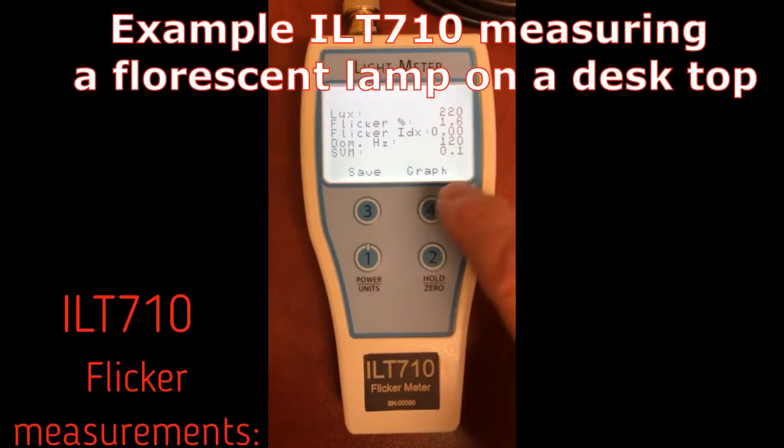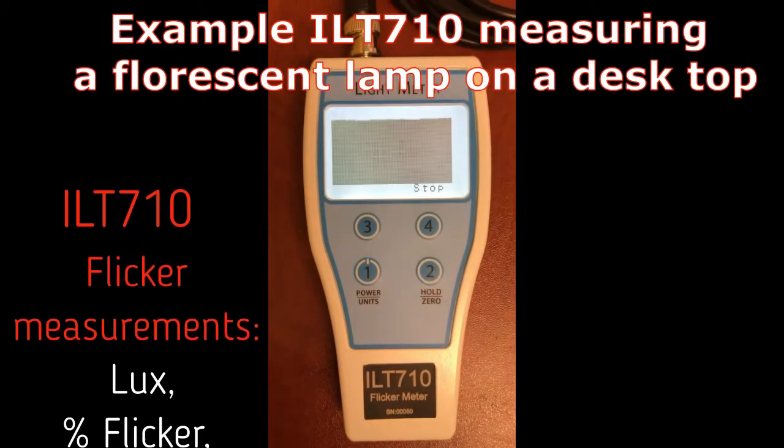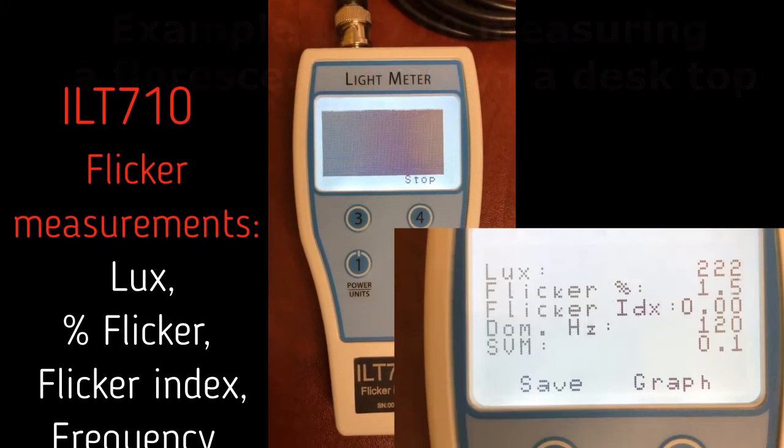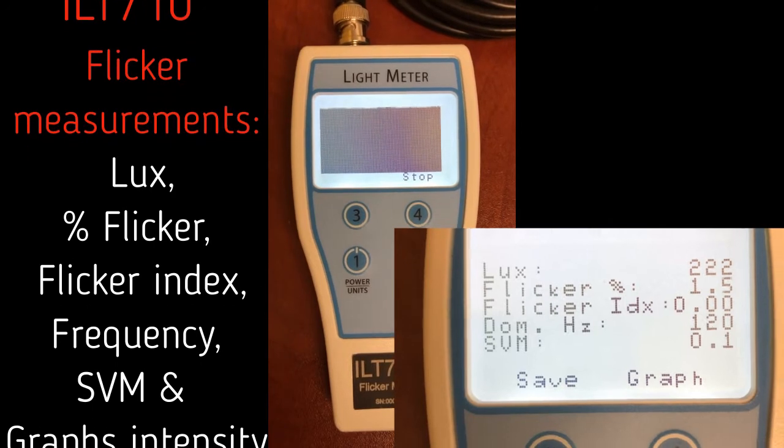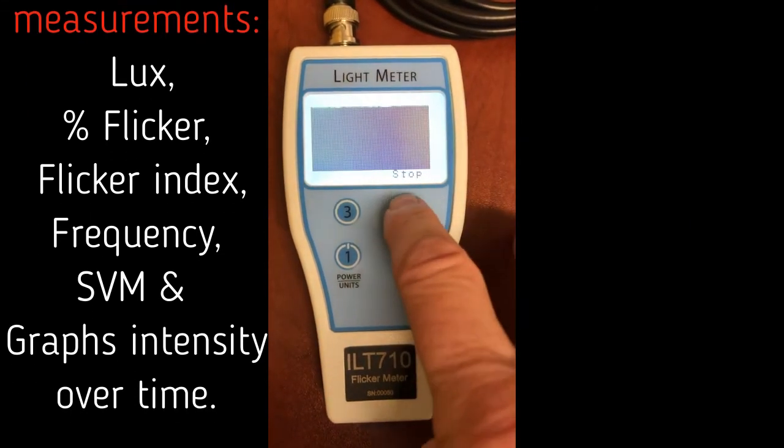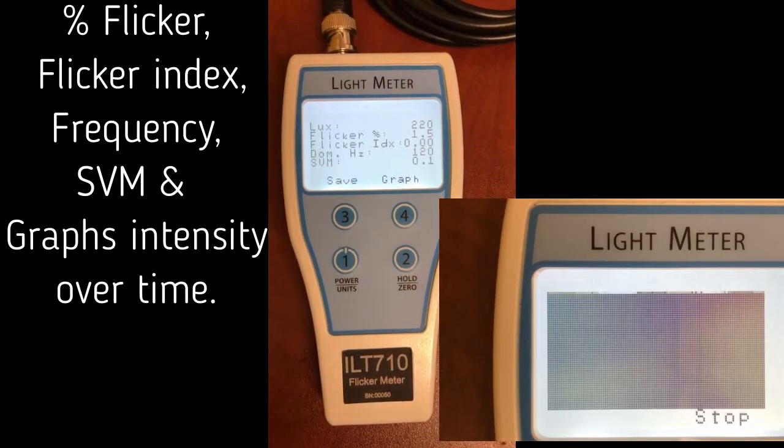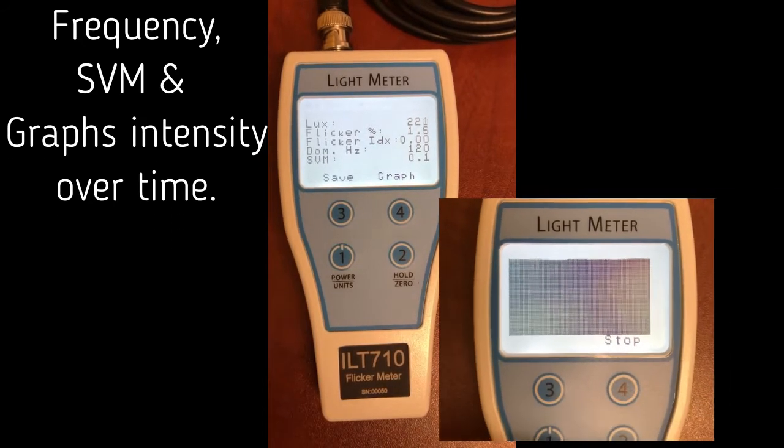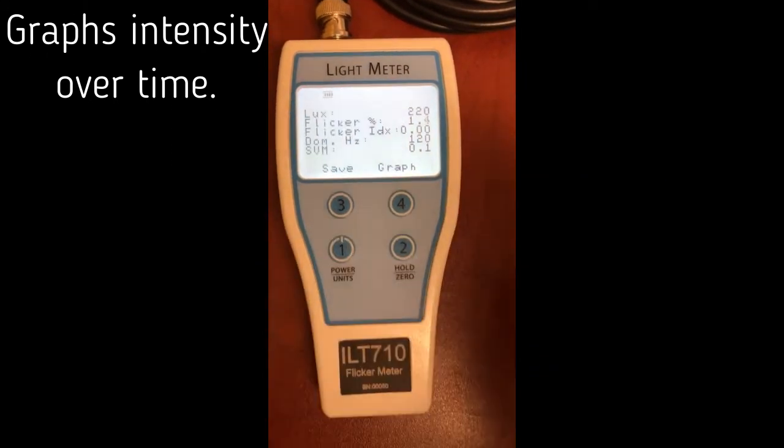The ILT710 flicker meter was designed for simplicity and includes both visual and analytical data that can be toggled between with the touch of a button as well as saved for future review.